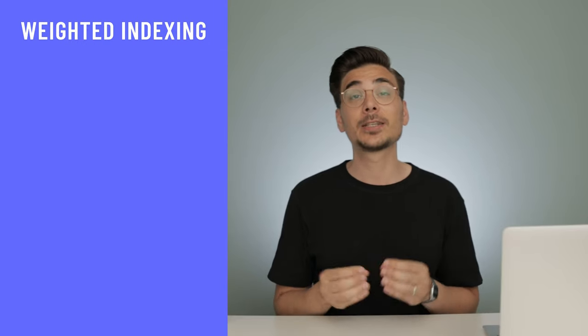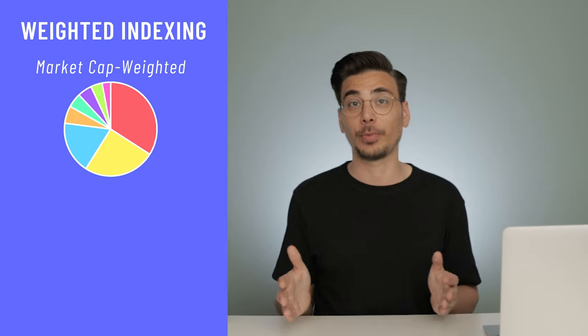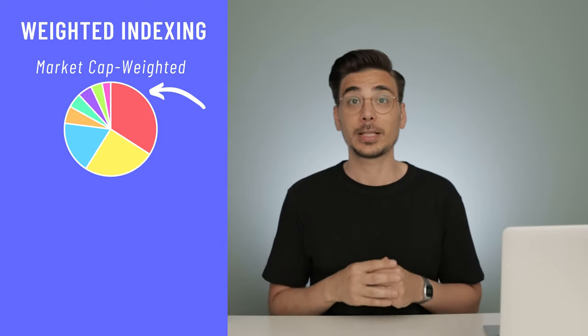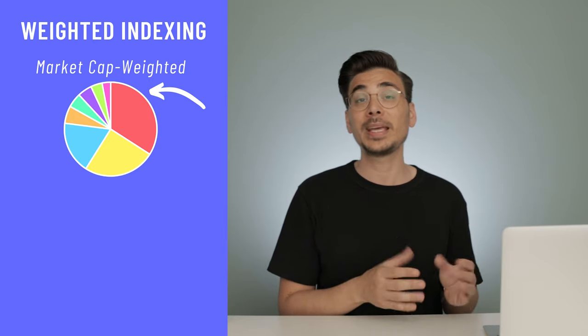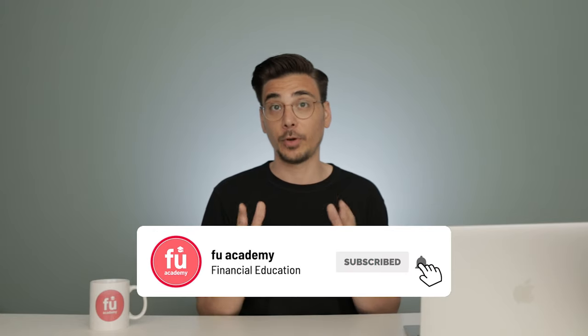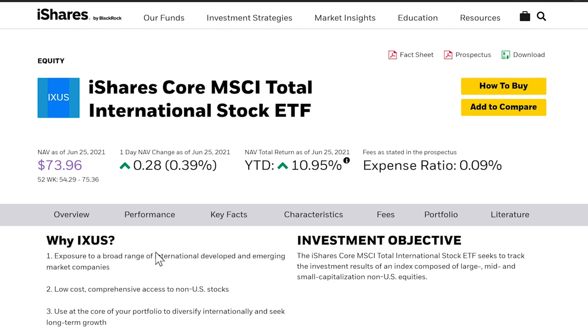This happens because most ETFs are weighted by market cap — like a pie chart where slices are based on company value. The bigger the company, the bigger the slice. Right now, the most valuable companies come from the US, which is why their share in global ETFs is larger. The opposite would be an equal-weighted ETF where all slices are the same size. Be aware that most ETFs are heavily invested in the same companies and countries. If you're from the US and want global diversification without overlaps, consider the iShares Core MSCI Total International Stock ETF (ticker: IXUS), which invests in 49 countries excluding the US.